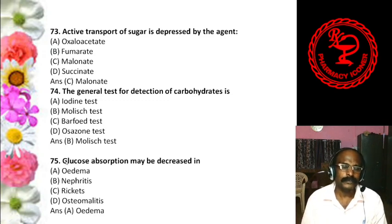Question 70: Cellulose is made up of molecules of — Alpha-glucose, Beta-glucose, Both, or None. The answer is A, alpha-glucose. Question 71: Iodine solution produces no color with — Cellulose, Starch, Dextrin, or Glycogen. The answer is cellulose — cellulose does not show any color in the iodine test.